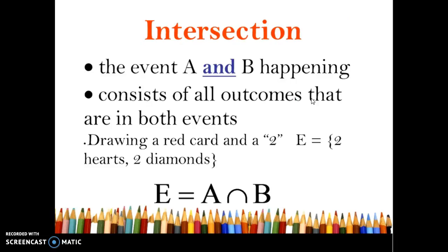Intersection is the event A and B happening. So now we're being picky. It can't be either or. It's got to be both. So in this case if I draw a red card and a 2, I have the 2 of hearts and the 2 of diamonds. That's the only part of the intersection. The way we label an intersection is an upside down U.